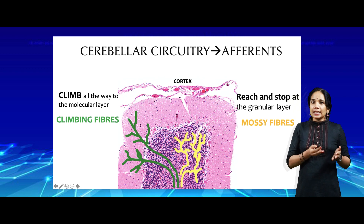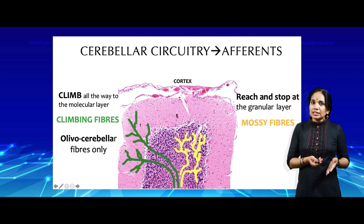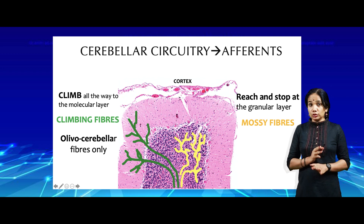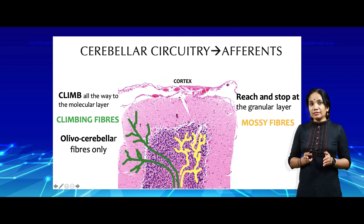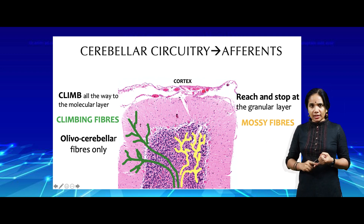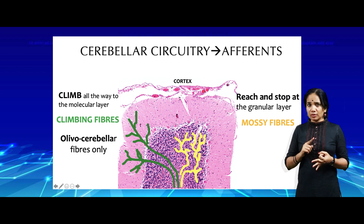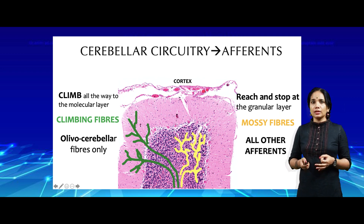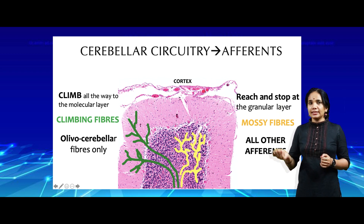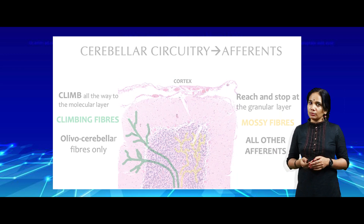Climbing fibers are all olivo-cerebellar fibers only — all of them start from the olivary nucleus. All other afferents coming into the cerebellum — whether from the cortex, the reticular formation, or the vestibular formation — are all mossy fibers. So only those starting with 'olivo' are climbing fibers; everything else is a mossy fiber.